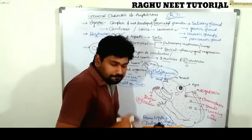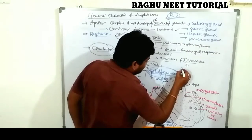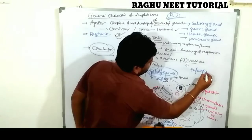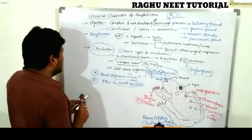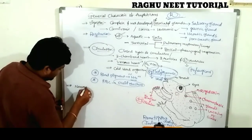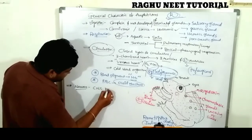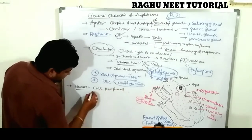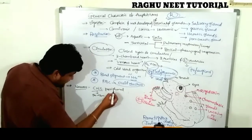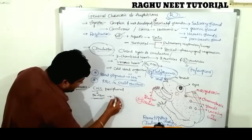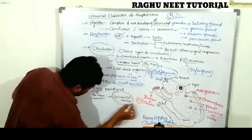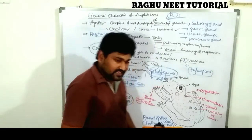Circulation also involves the sinus venosus (spilangium). Regarding the nervous system, amphibians have a very well-developed central nervous system and peripheral nervous system. The brain is covered by two membranes: pia mater and dura mater. Very importantly, amphibians have only 10 cranial nerves — not 12.